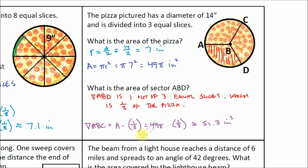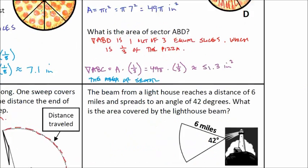So if you want to write this as a complete sentence, you would say the area of sector, I'm going to let you write the rest of it. The area of sector A, B, C is approximately 51.3 inches squared. Alright, and last one.